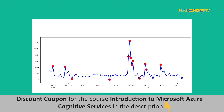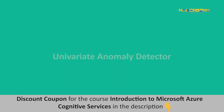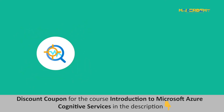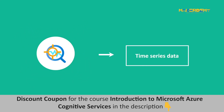The anomaly detector service examines real-time or pre-recorded data to determine if a data point is an anomaly, by randomly selecting the best algorithm to ensure high accuracy for our scenario.